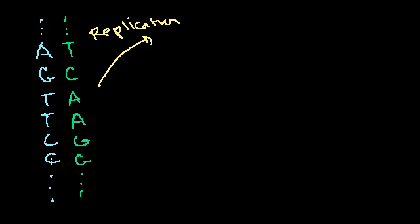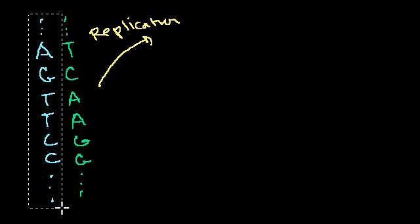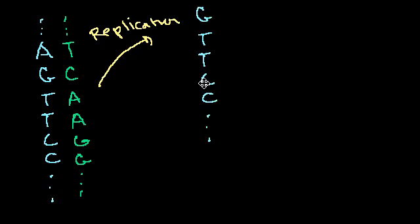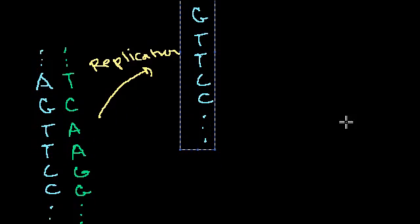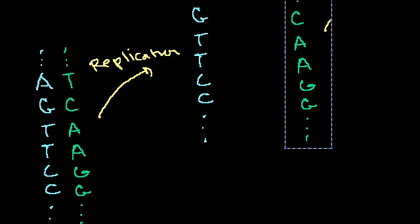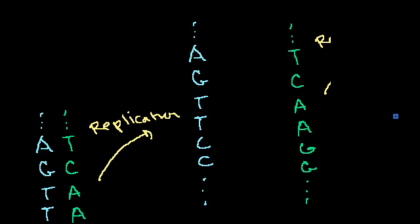I'm doing a gross oversimplification, but the idea is these two strands separate. That doesn't happen on its own — it's facilitated by a bunch of proteins and enzymes. I'll talk about the details of the microbiology in a future video. So these strands separate from each other, and then once they've separated, each can become the template for the other.